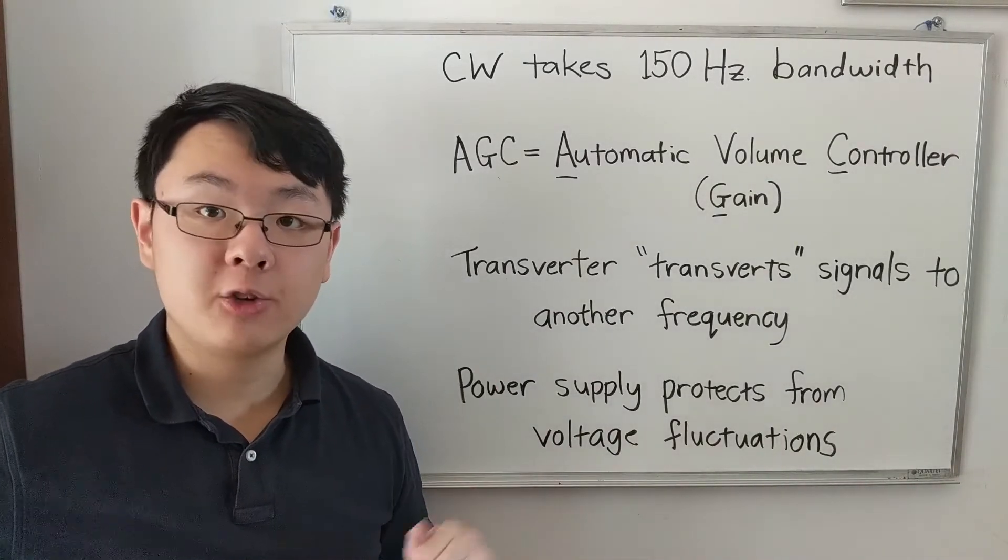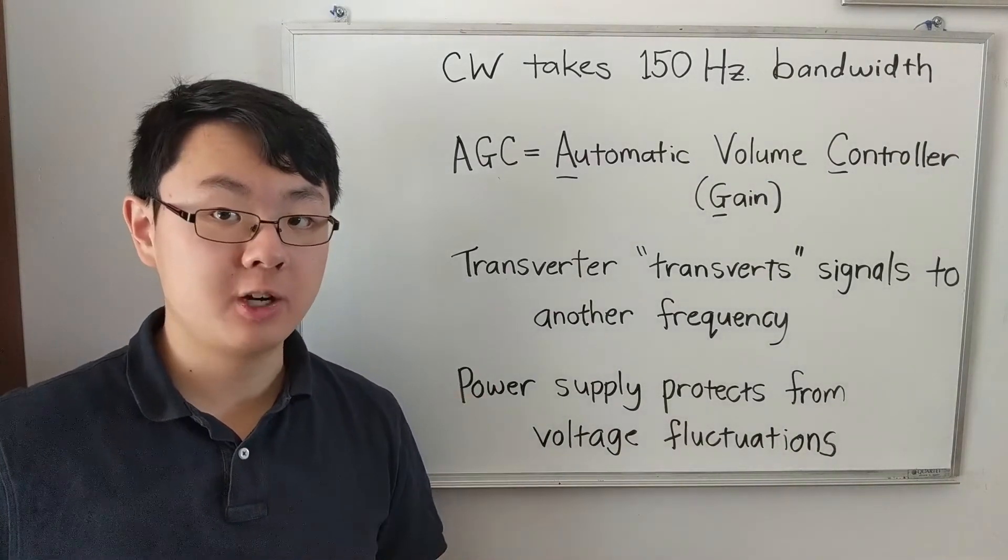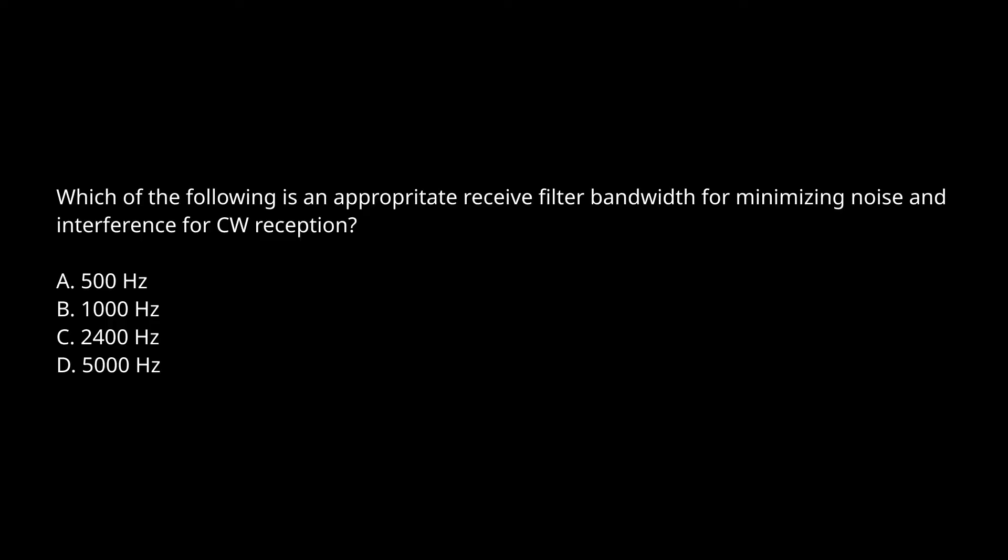This trick also applies to one more question: which of the following — 500, 1000, 2400, or 5000 Hz — is an appropriate received filter bandwidth to minimize noise and interference for CW reception? The answer is again the smallest bandwidth choice on the list: 500 Hz. The smallest choice for the mode with the smallest bandwidth.